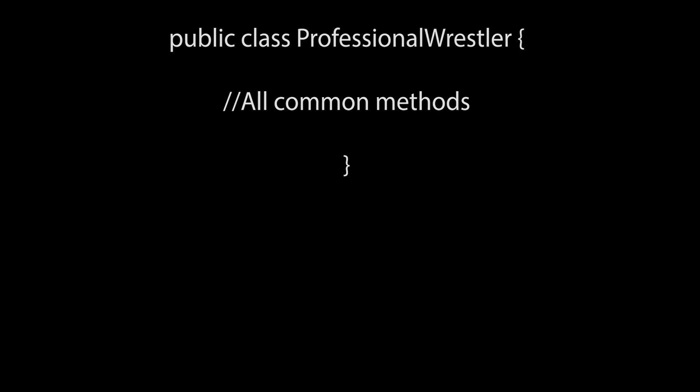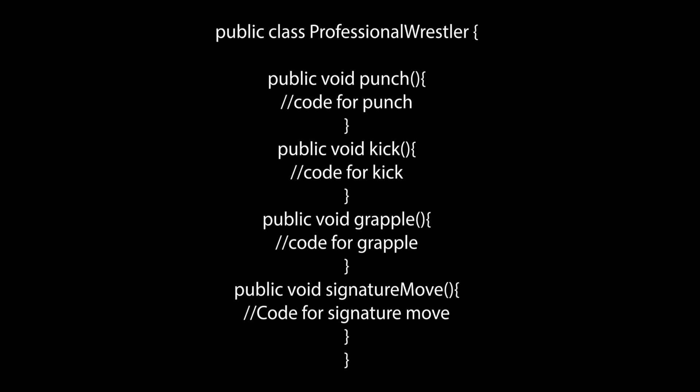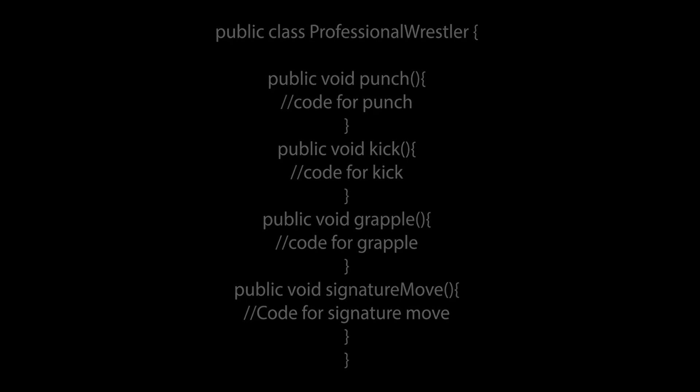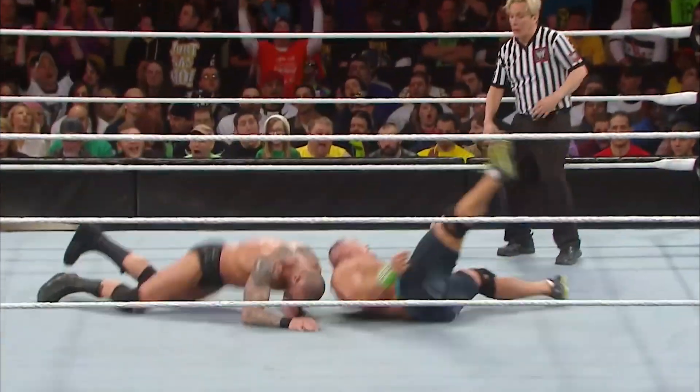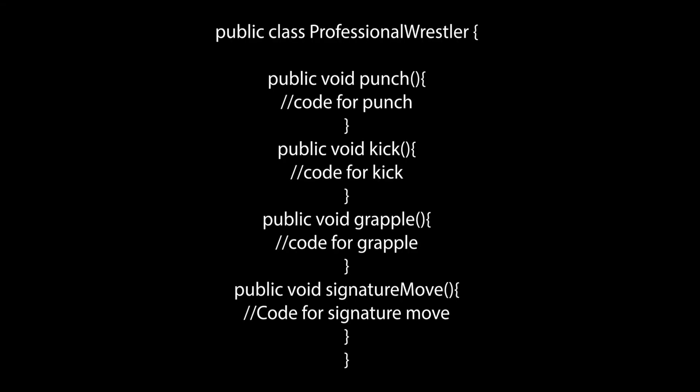The professional wrestler superclass should have four methods representing four actions every wrestler should be able to do: punch, kick, grapple, and signature move. Every wrestler should punch, kick, and grapple in the same way, so using the superclass implementation for those is fine. However, not every wrestler performs their signature move the same way. If I implement signature move in the superclass to perform, say, the RKO, then every subclass inheriting it would have every single wrestler doing the RKO.